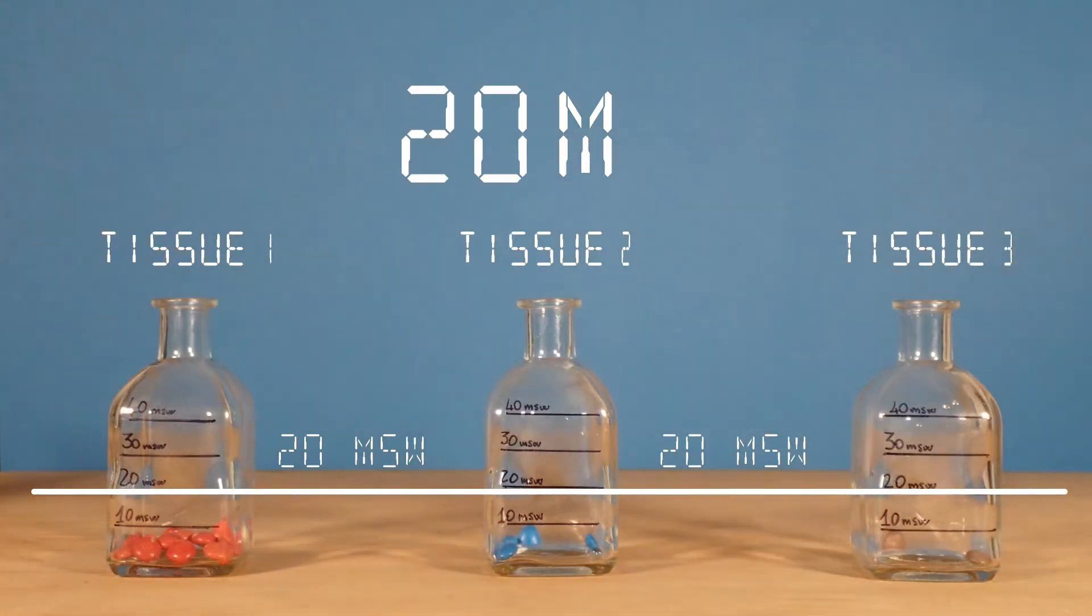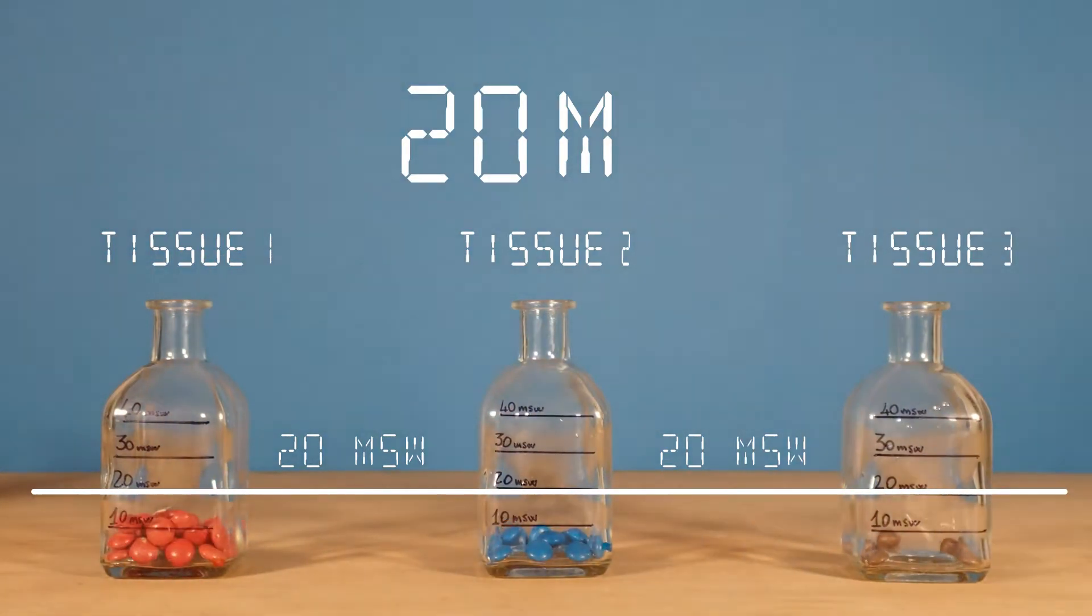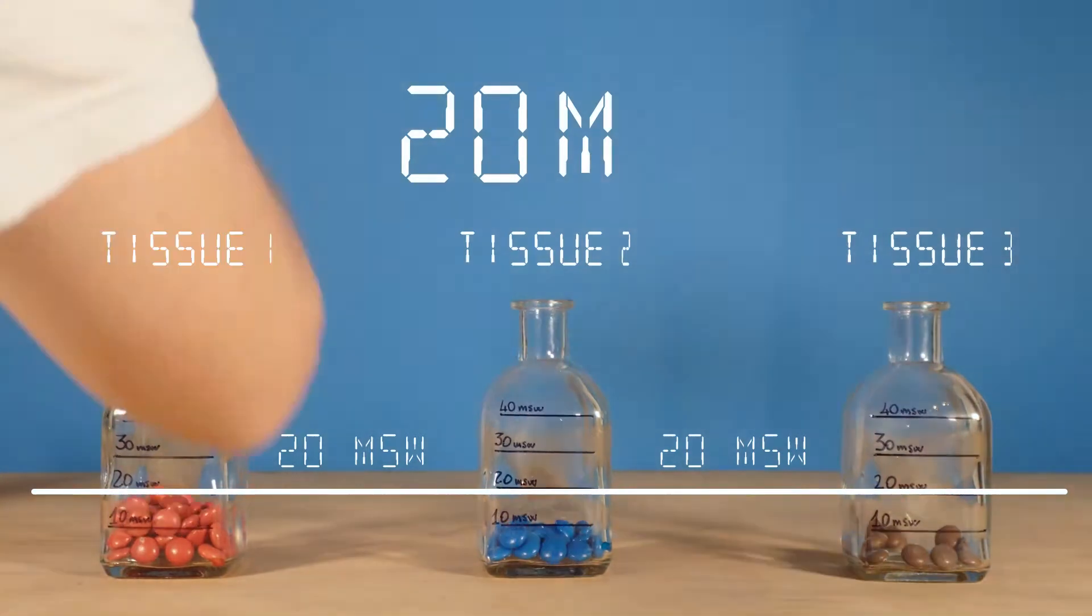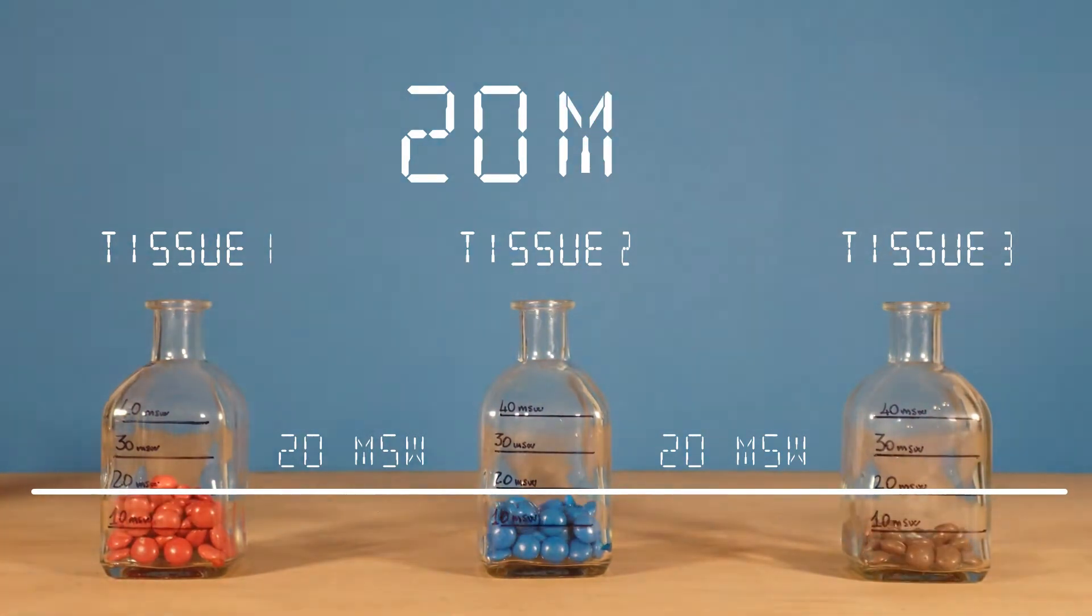Any body tissue at any given depth will eventually absorb enough nitrogen to be at equilibrium with the surrounding environment. This is called saturation. The process of absorbing nitrogen is called nitrogen loading.